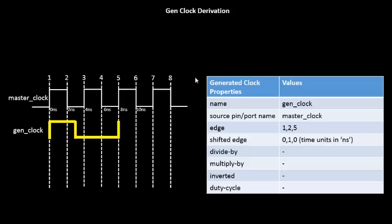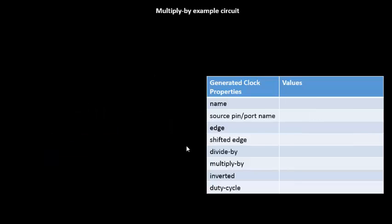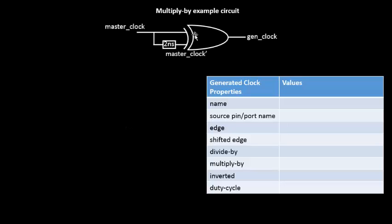That was about GenClock derivation and the introduction to the shifted edge option. The final topic pending is the multiply-by option and the duty cycle, which is pretty simple — not as complicated as the previous ones. For multiply-by, let's look at a sample circuit. For example, you have an XOR gate. One of the inputs of the XOR gate is the master clock, and the second input is the master clock but delayed by 2 nanoseconds. The combination of these two creates a generated clock output.